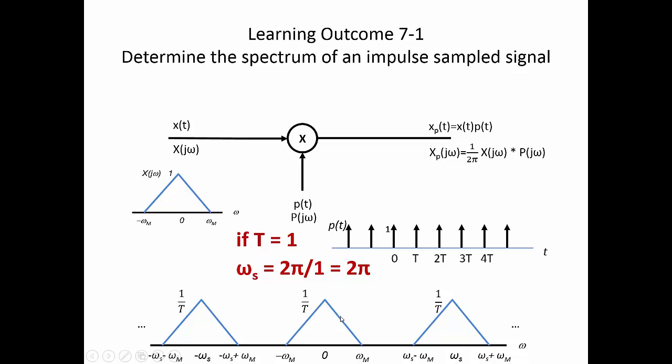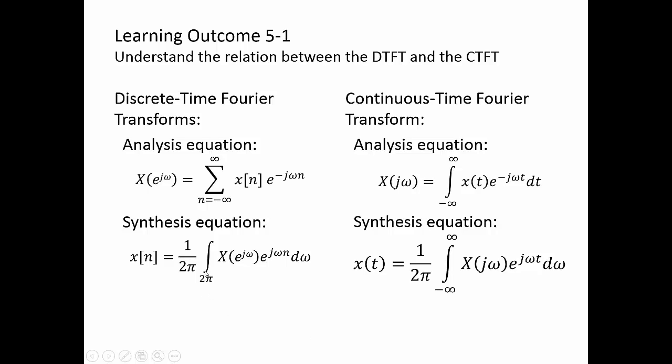We said that our spectrum repeats itself every omega s units, therefore for a discrete signal x of n, it will have a spectrum that repeats itself every 0 to 2 pi units. That is the reason why this integral only goes over any one period 2 pi, because our spectrum x e to the j omega repeats itself every 2 pi units. And similar to when we were looking at the integral for the Fourier series, it doesn't matter which 2 pi you use.